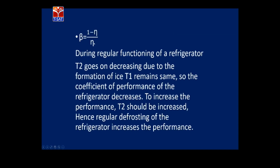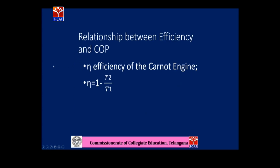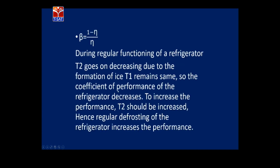When T2 decreases, η increases, and since β = (1 − η)/η, β decreases. During regular functioning of a refrigerator, T2 goes on decreasing due to ice formation inside the deep freezer, while T1 (surrounding temperature) remains the same. So the coefficient of performance decreases over time. To improve performance, T2 must be increased, which is done by regular defrosting of the refrigerator.